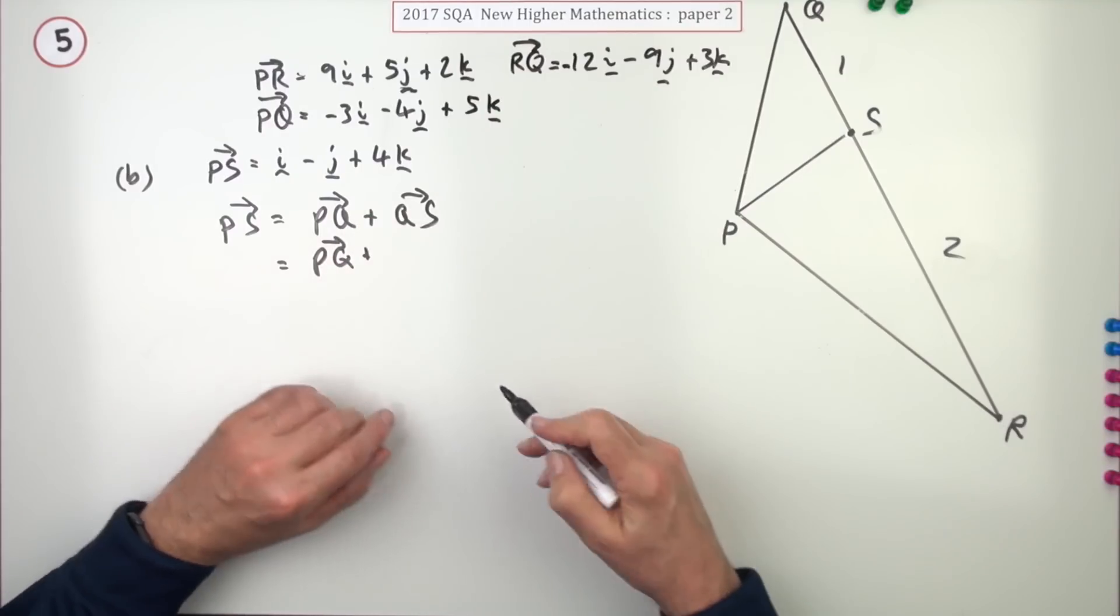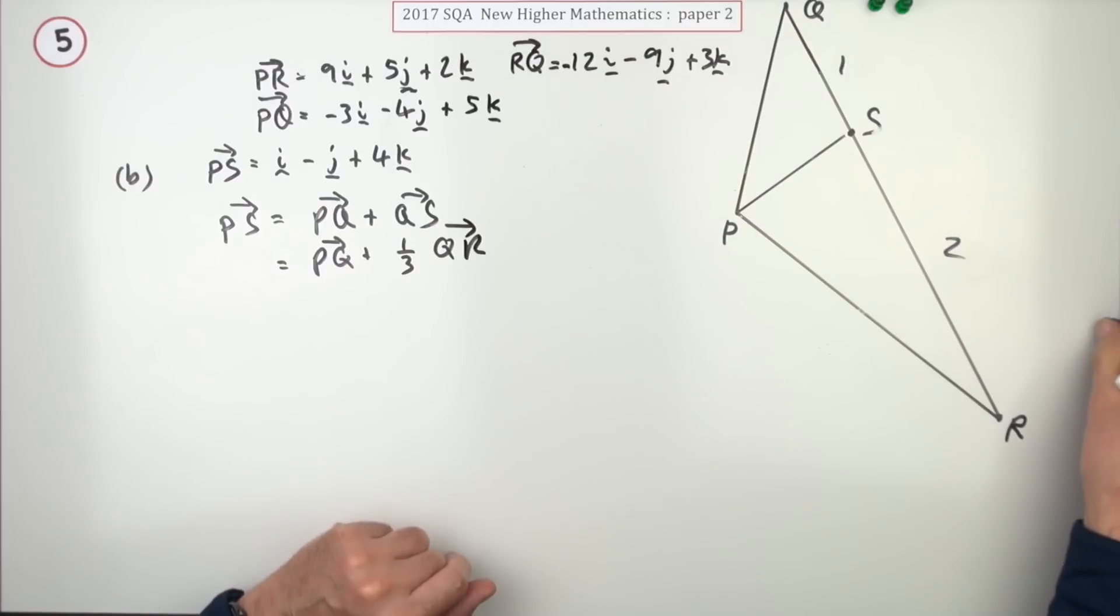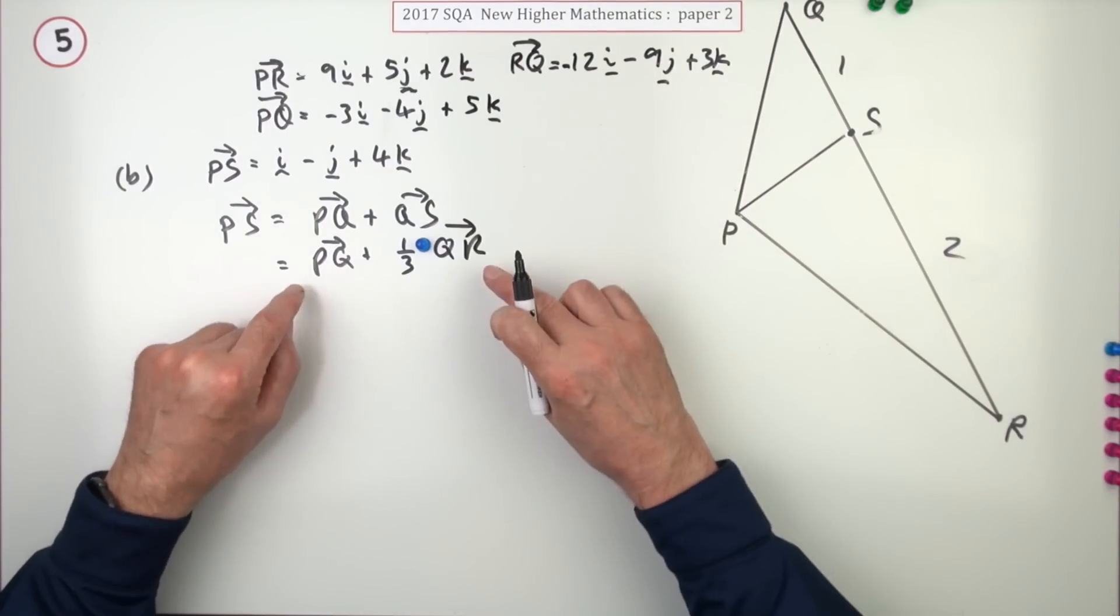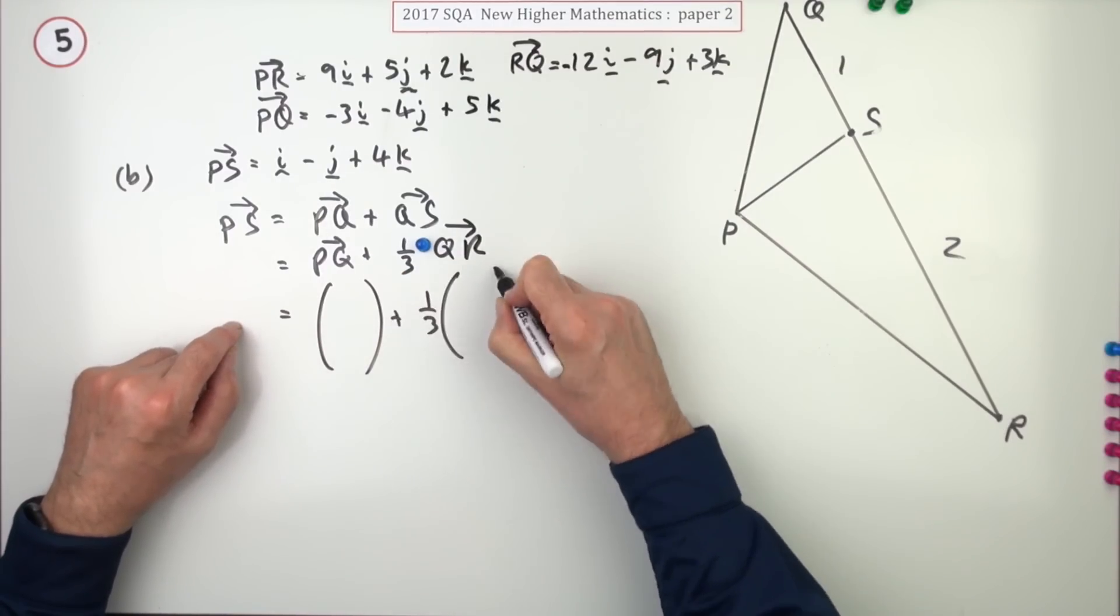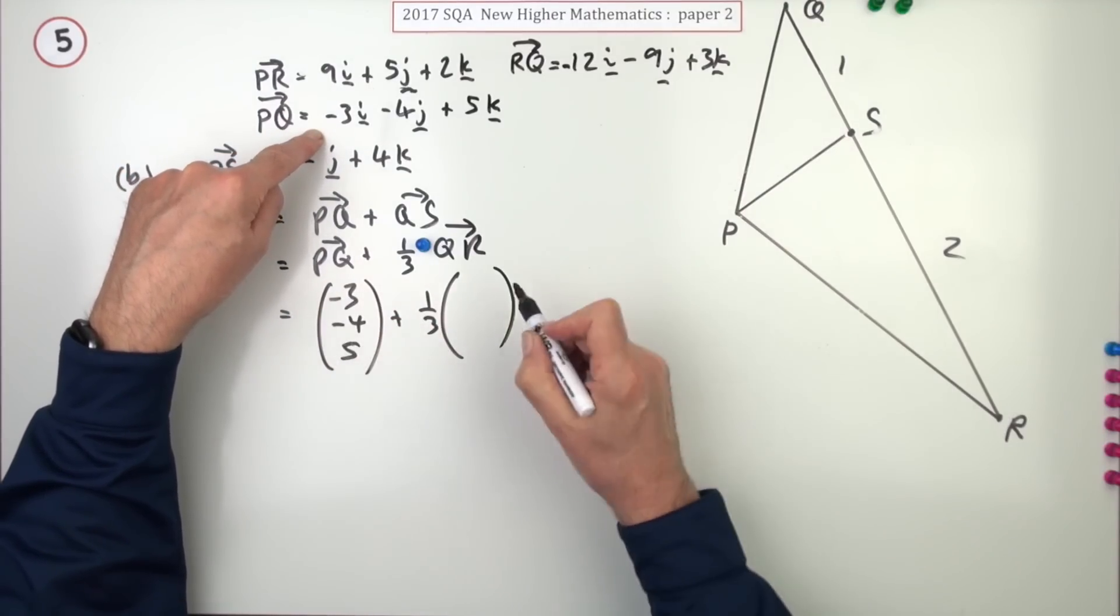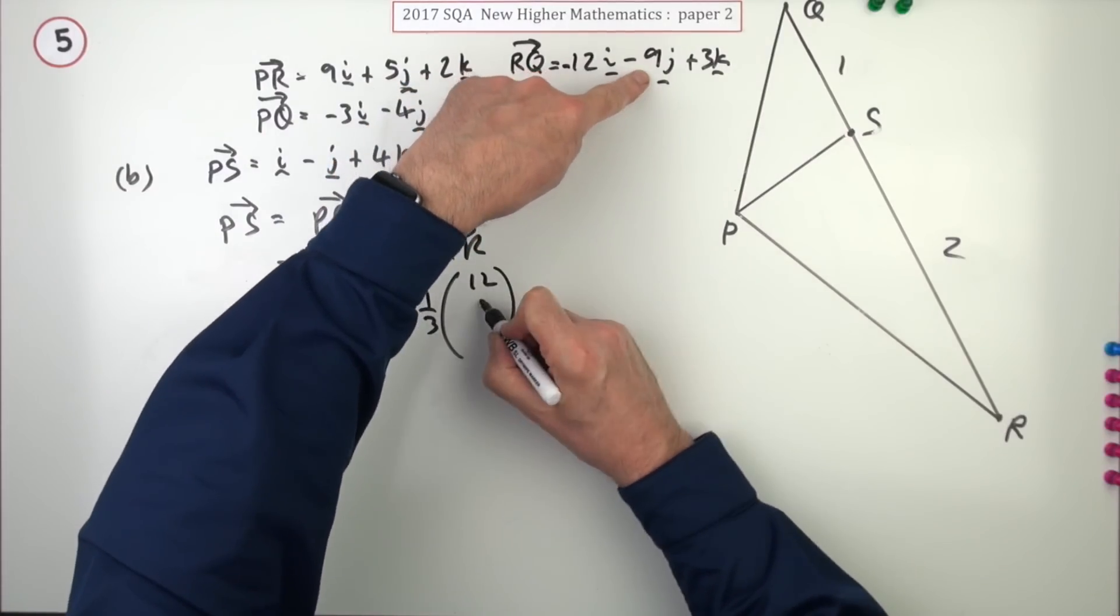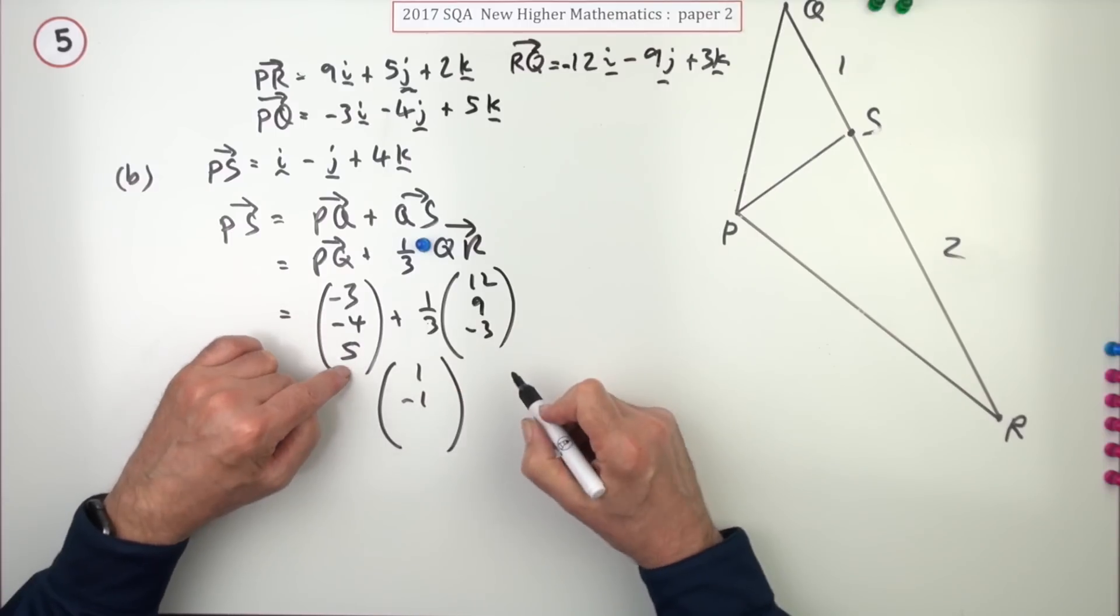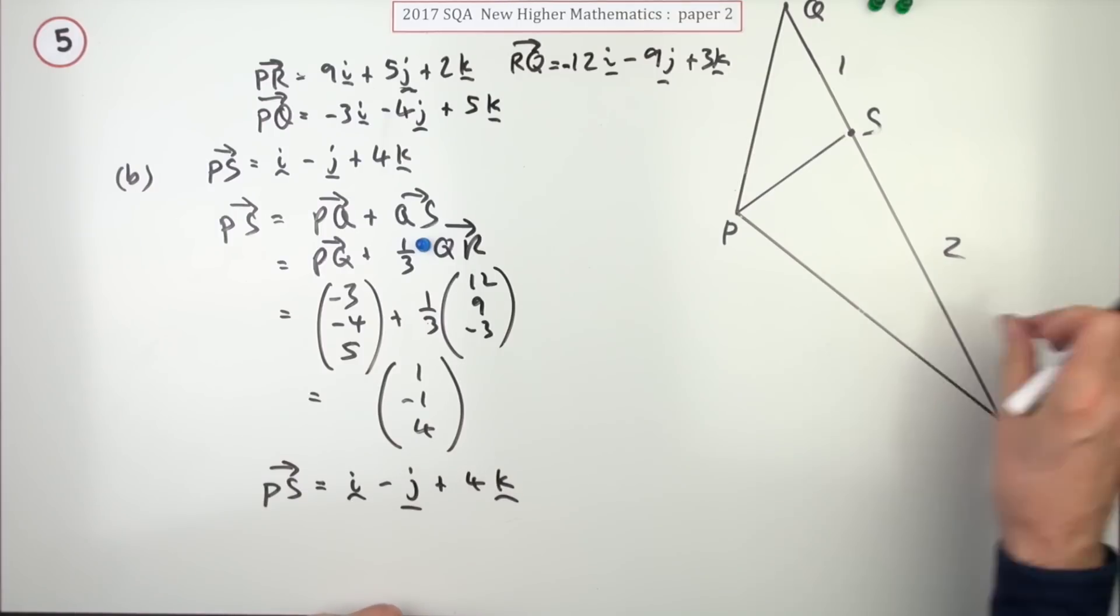And importantly, Q to S is one out of three bits. It's one-third of the way from Q to R. That fraction is the important part here. Realising that fraction of one-third gets you the first mark. You could state it separately, but I've incorporated it in the pathway, which is partly towards the second mark. Now, I think I'll just write this in column form. PQ was negative 3, negative 4, 5. QR, well, I've got RQ, but RQ goes the opposite way. So instead of negative 12, I'll make it a 12. Instead of negative 9, I'll make it a 9. Instead of 3, I'll make it a negative 3. So that's negative 3 plus 4 is 1. Negative 4 plus 3 is negative 1, and 5 minus 1 is 4. But it said, show that it equals this. So I'll write it back that way. 1 lot of i minus 1 lot of j plus 4 lots of k. There's the second mark.